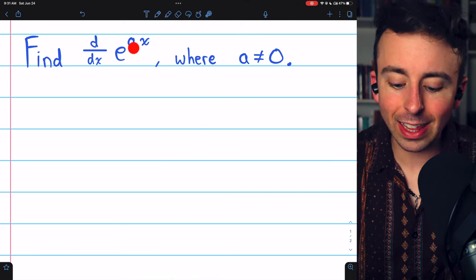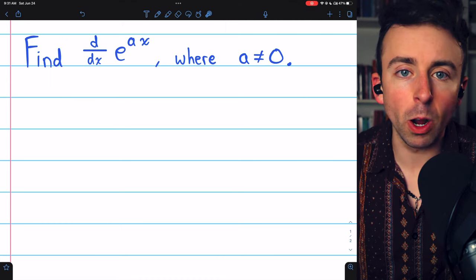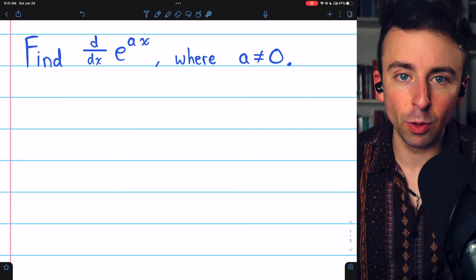Let's consider e to the ax, where a is a non-zero real number. Let's find the derivative.